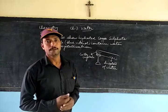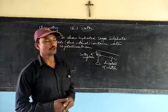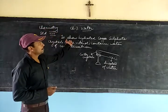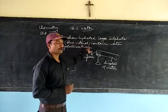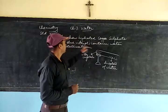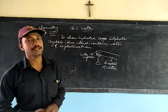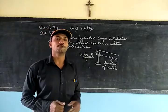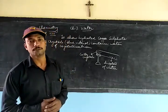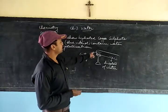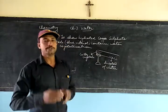We have an experiment here to show hydrated copper sulfate crystals, which are also called blue vitriol, and they contain water of crystallization. This experiment is basically to check whether the crystal of copper sulfate contains water of crystallization or not. For this, you have to take copper sulfate crystals in a test tube.